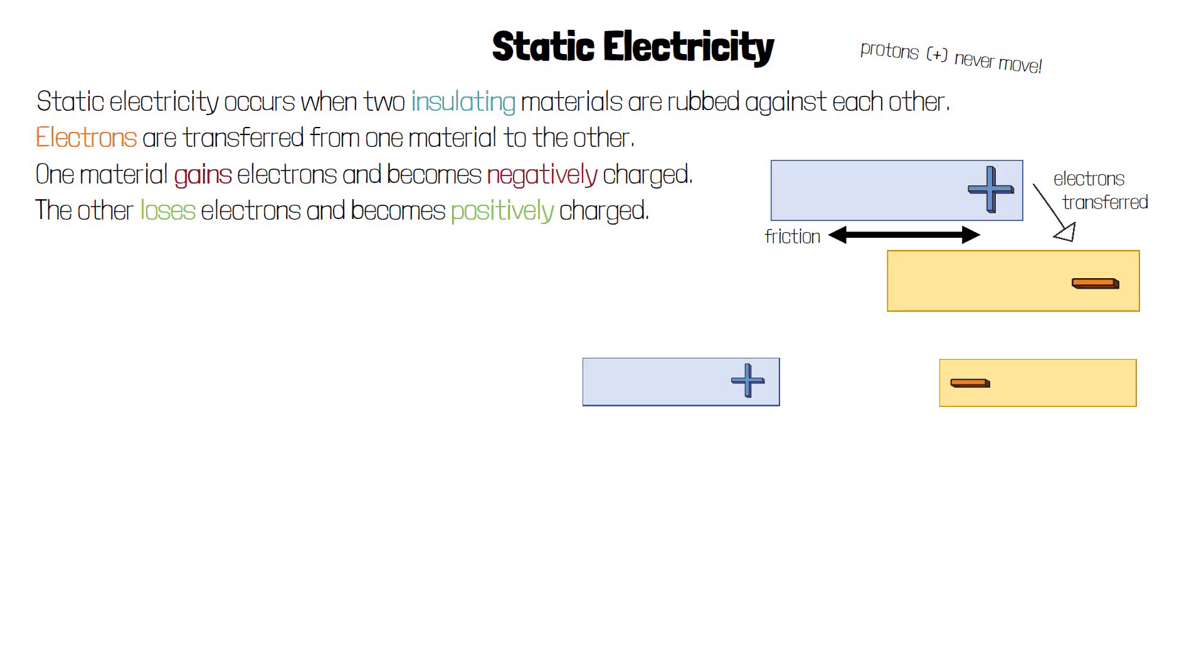If you have two objects with opposite charges, they'll exert an electrostatic force on each other and attract each other.